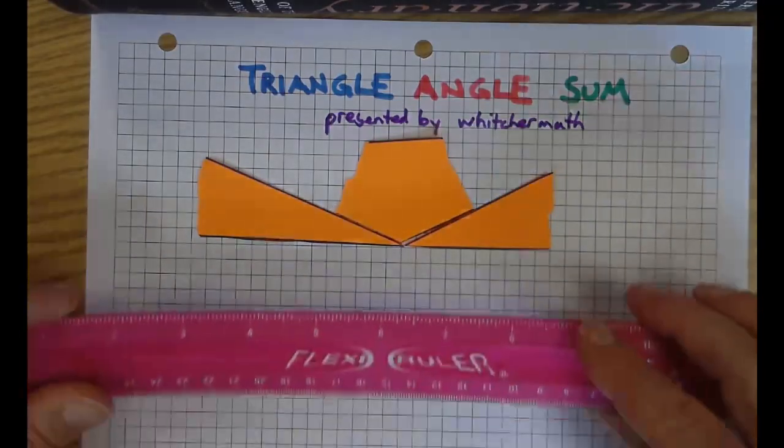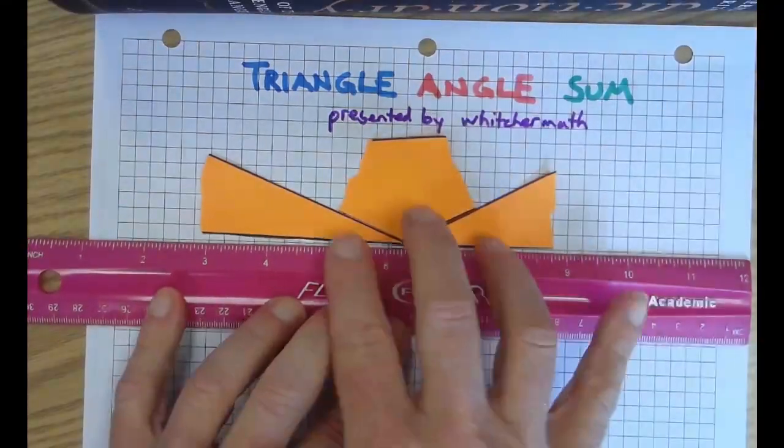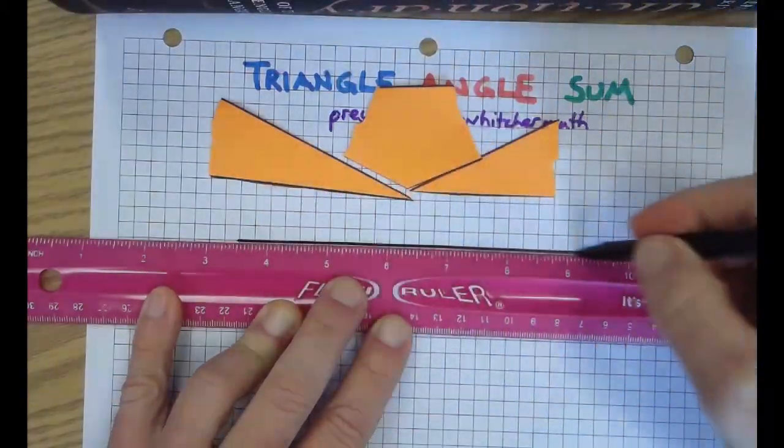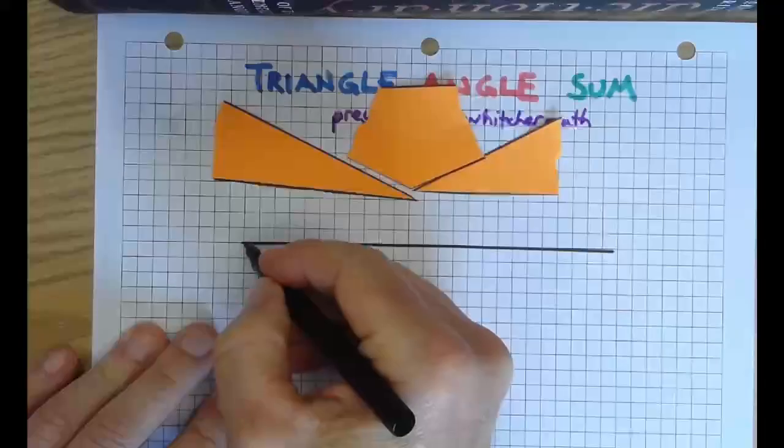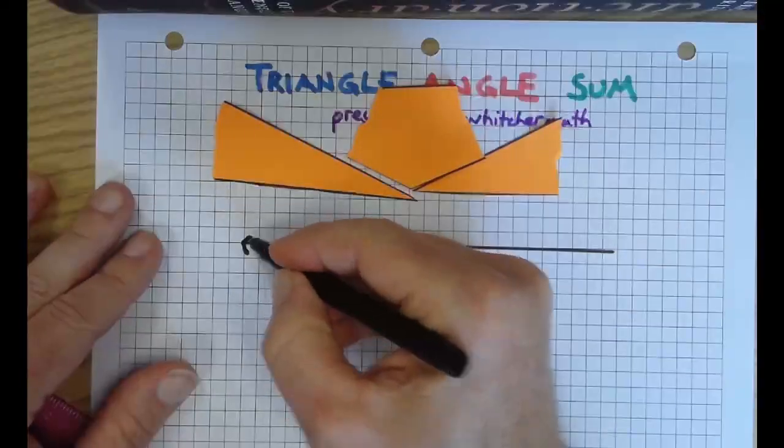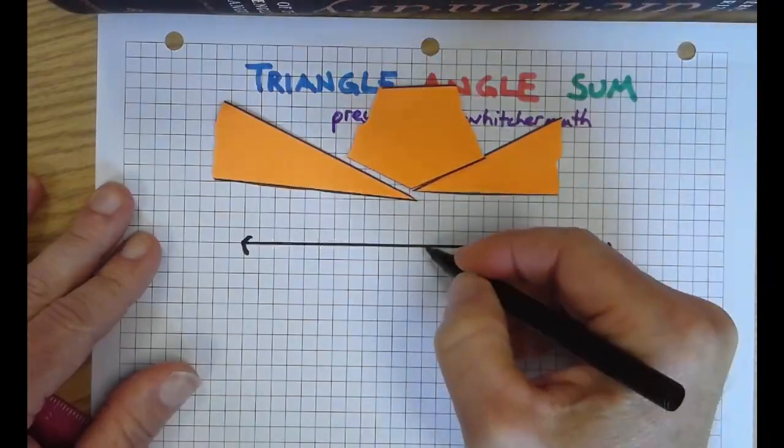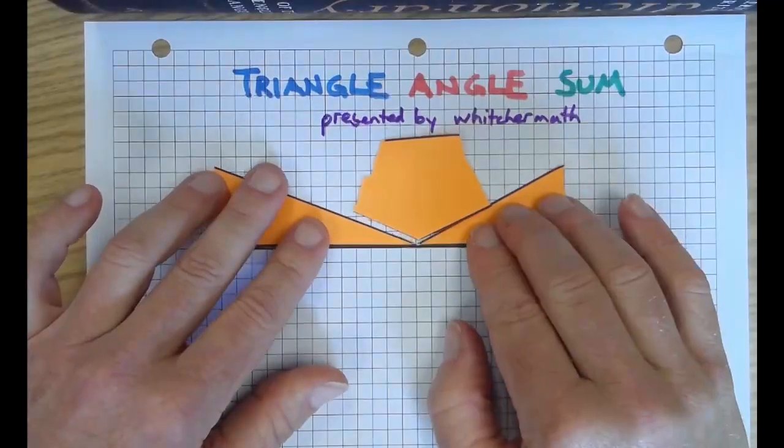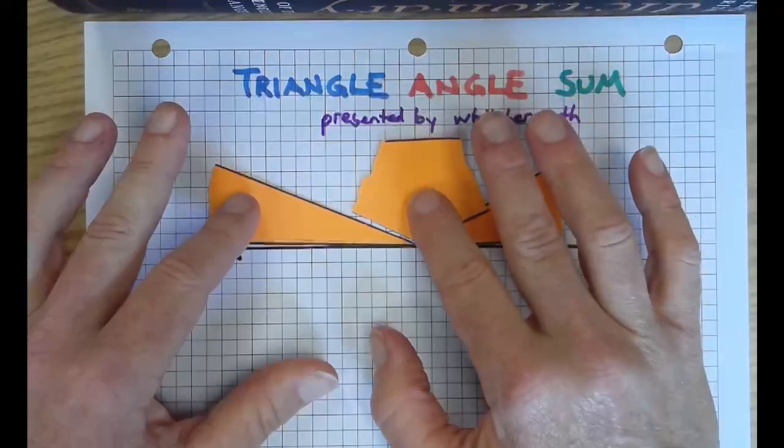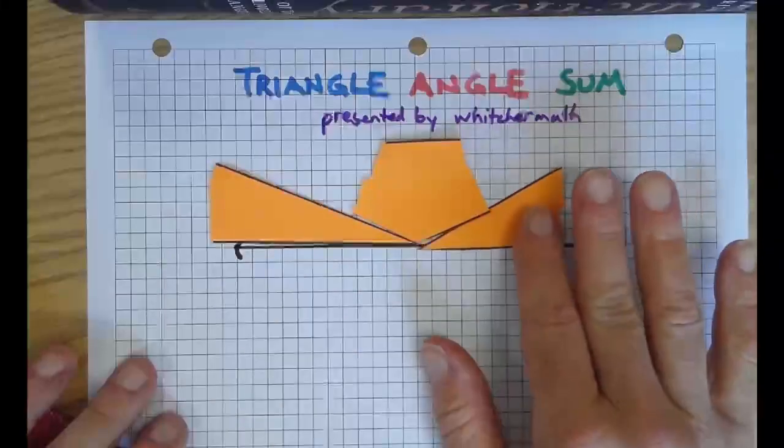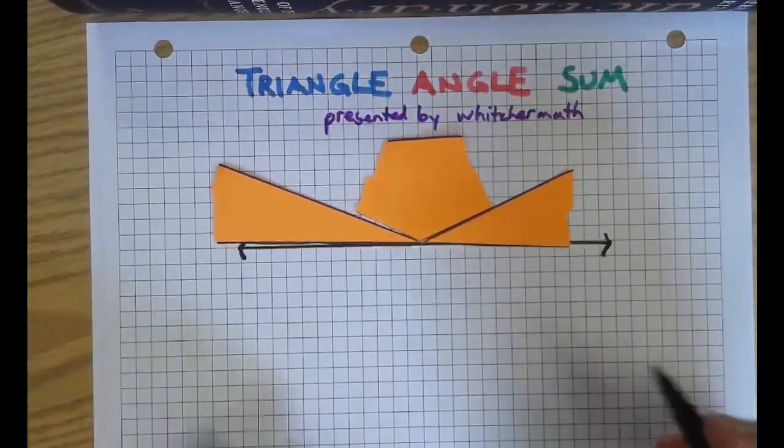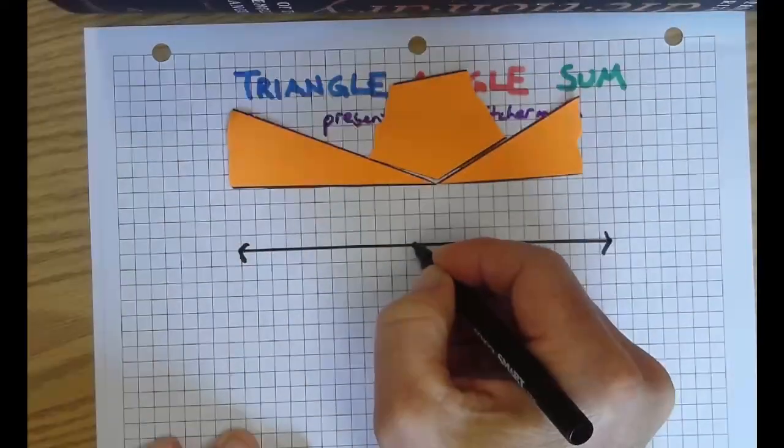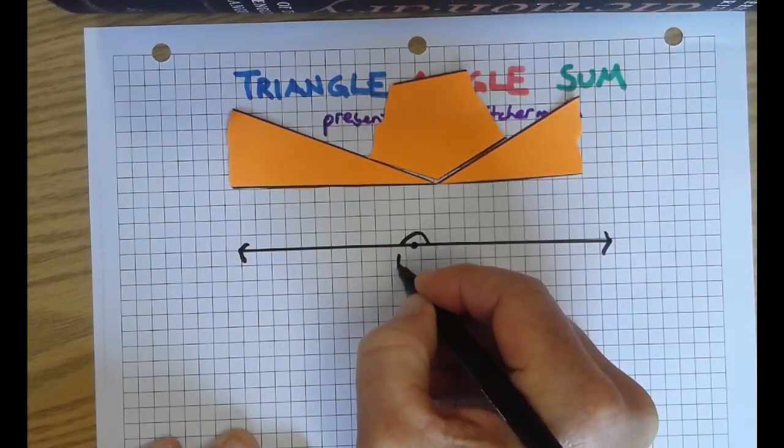I'm gonna take a ruler and actually draw that straight line to emphasize it a little bit. If you don't have graph paper, you should do the same thing. Put the little arrows on. So triangle has three angles and the angles add up to this is 180, right? It's a straight angle.